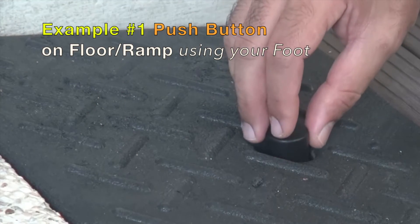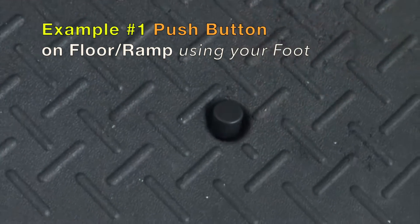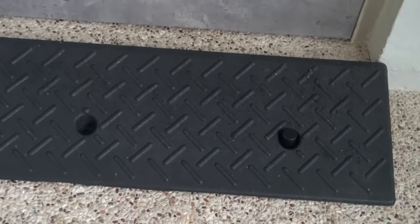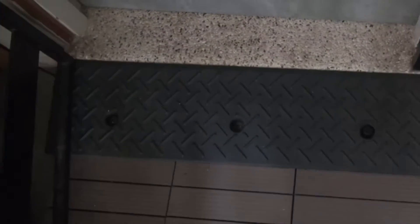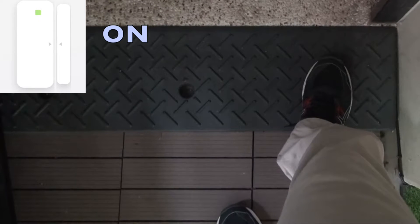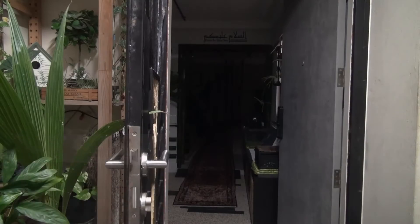The push button switch can be positioned at a convenient part of the ramp. Once your foot presses on it, it will turn on the sensor. The sensor will then trigger home automations.